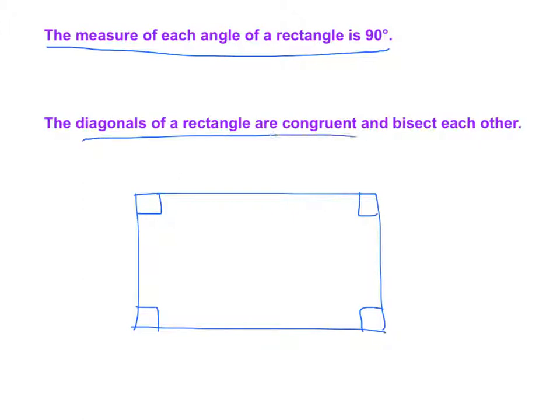The diagonals of a rectangle are congruent and bisect each other. We have here a diagonal, and here a diagonal. They're congruent, and they bisect each other. They're going to form four equal segments here.